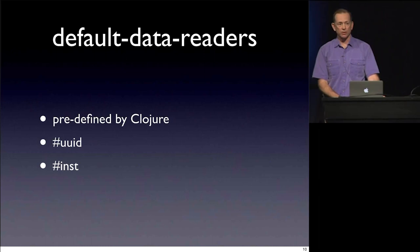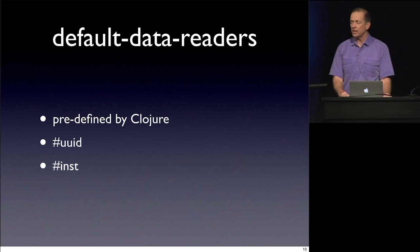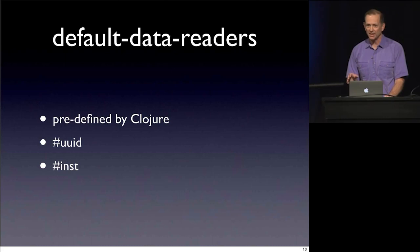If there's no data reader defined for a particular tag, Clojure looks at the predefined default data readers built into Clojure. In particular there's UUID, which gives you a unique value useful for keys or identifying data — the nice thing about UUID is you don't need any central authority to coordinate unique values; it's an algorithm where even two separate machines are very unlikely to generate the same value. And `inst` is Clojure's abbreviation for instant, representing an instant in time.